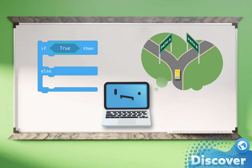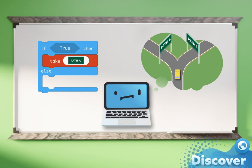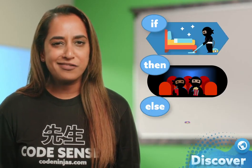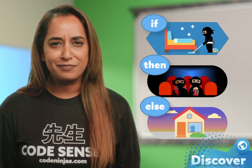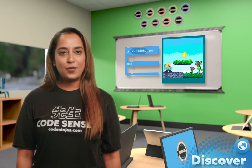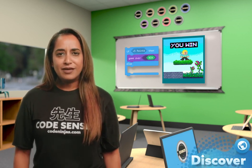If a situation is true, then the program will follow that path, else it takes another one. If you clean your room, you go to the movies, else you stay home. Here's another example: if you earn five points, then you win the game, else you lose.